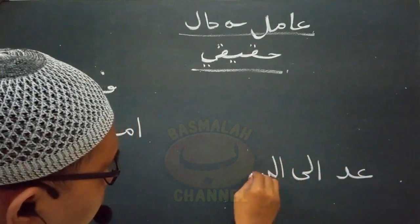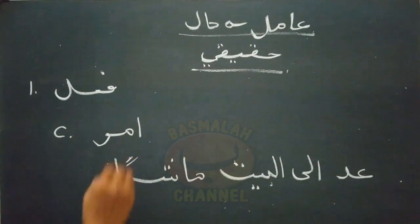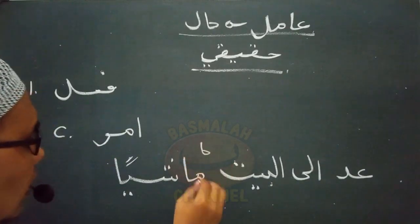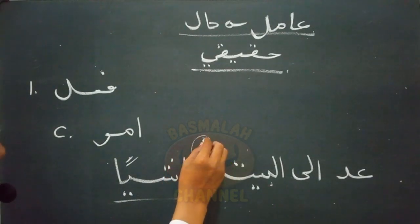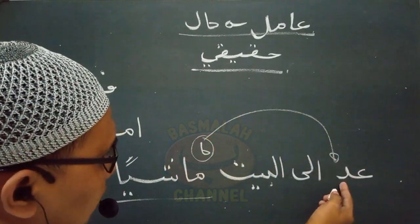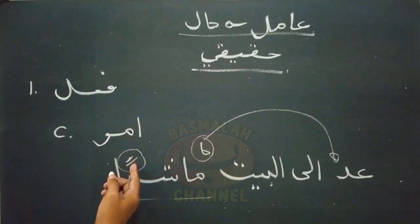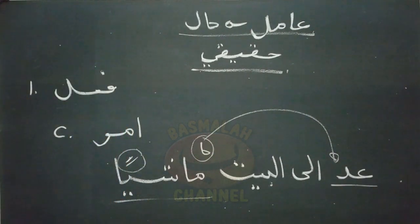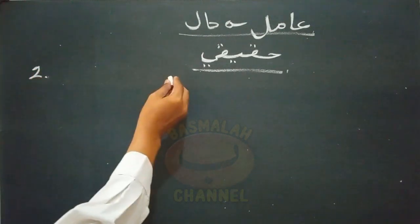Contoh fi'il amar seperti lafat 'ud ilal baiti masyan' - kembalilah ke rumah dalam keadaan berjalan kaki. Masyan di sini adalah hal yang menjelaskan keadaan daripada domer yang terkandung di dalam fi'il amar, yang dalam maklini sebagai sohibul halnya. Lafat masyan wajib dinasokkan dan amilnya yang menasokkan adalah berupa fi'il amar yaitu lafat 'ad'.